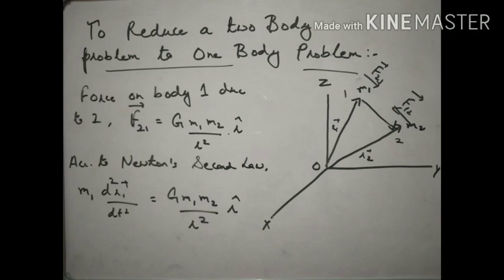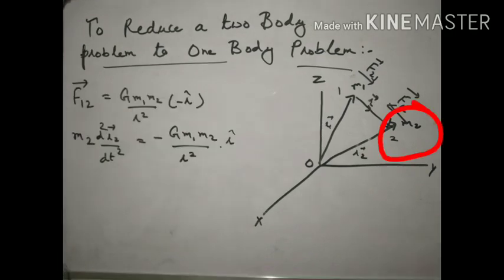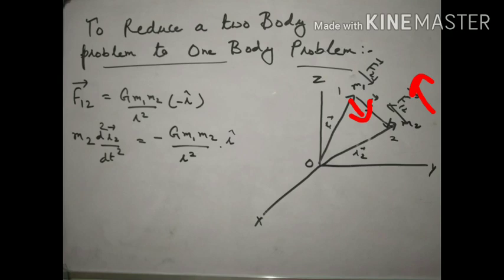We have equated both forces. Similarly for mass m2, the gravitational force on body 2 due to body 1 is f21 = G·m1·m2/r² with minus r-cap. It is minus because the direction of force is opposite to the position vector r.